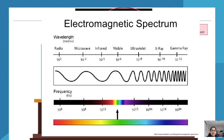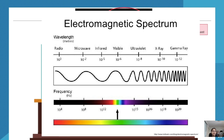This is the electromagnetic spectrum, and we can see that in terms of electromagnetic radiation, it goes from radio to gamma rays. As you go along this side, it becomes more penetrative.